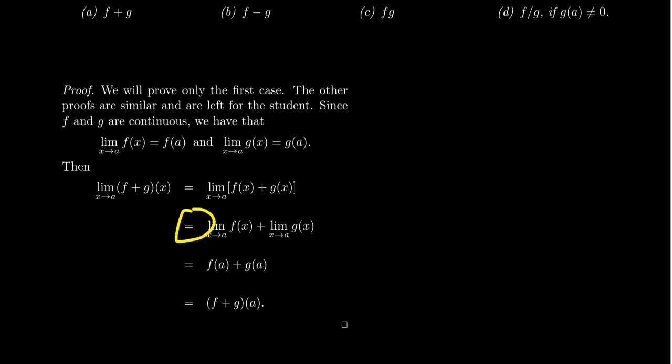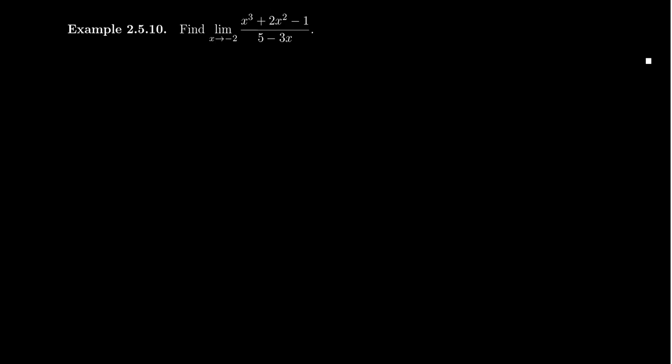A similar property of limits — particularly this equality — can be used to modify this proof to show division, multiplication, and subtraction. So let's see how we can use these properties. Let's suppose we want to find the limit as x approaches negative 2 of x cubed plus 2x squared minus 1 over 5 minus 3x.